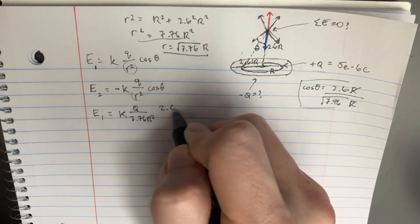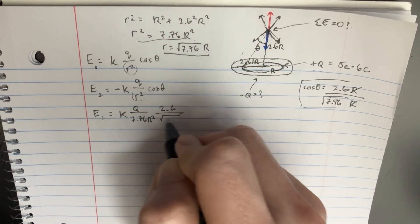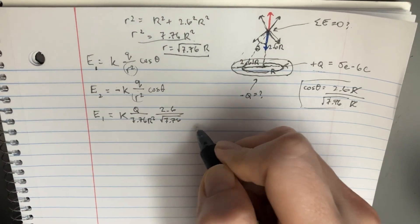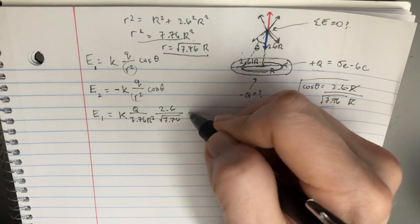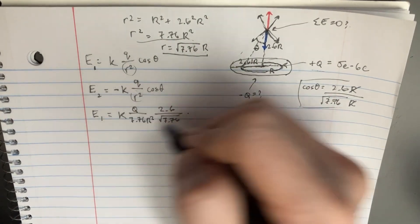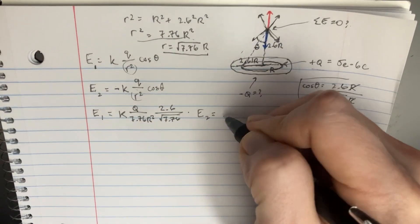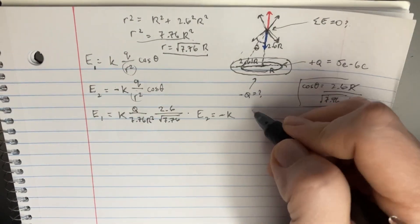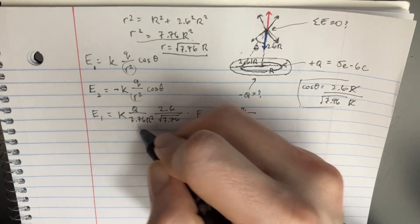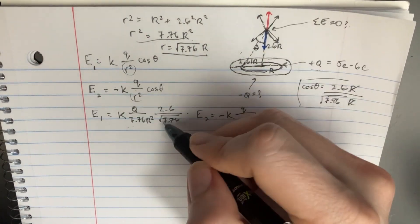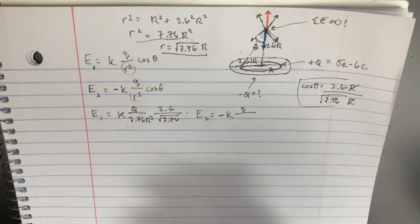2.6 divided by the square root, 7.76. All right, and then we can say that E2 is equal to the negative k q, this is small q, divided by, what's the new r's over here?